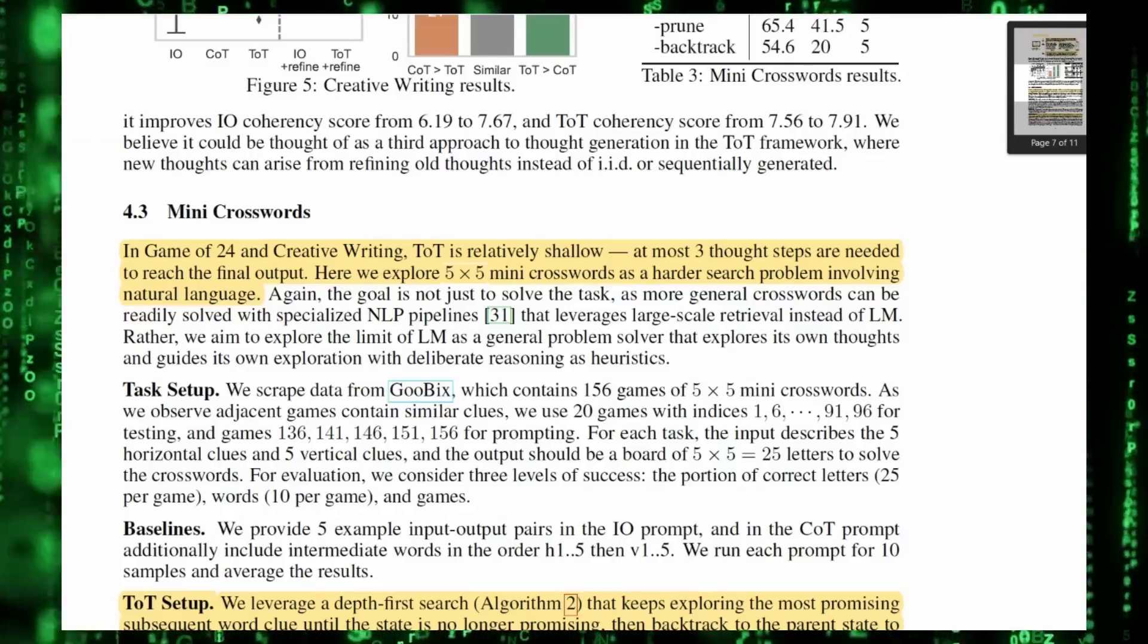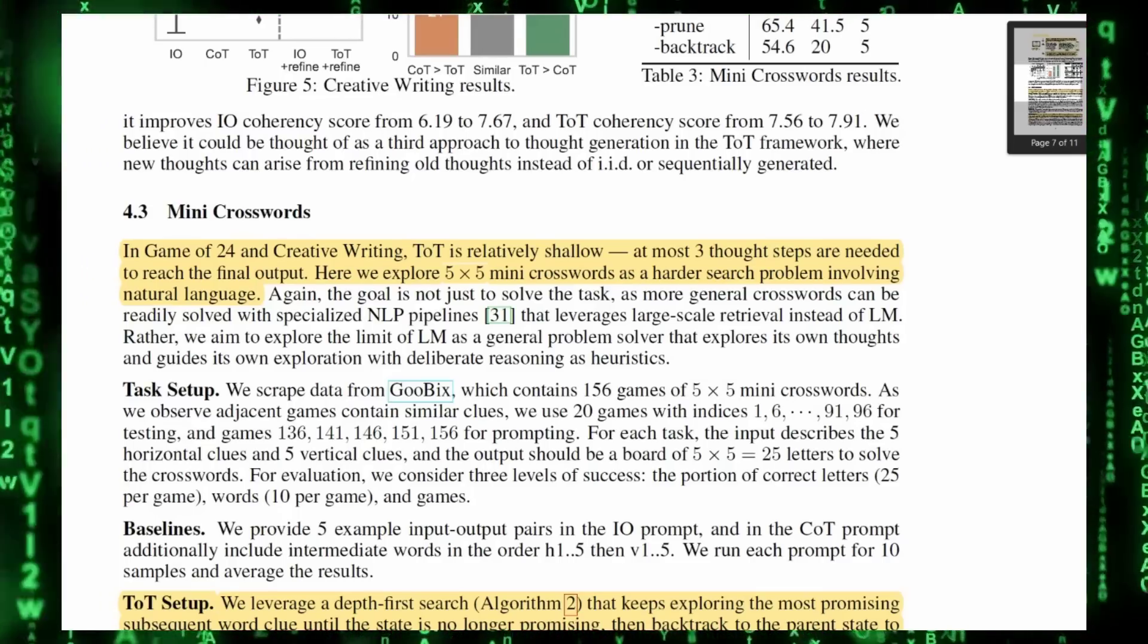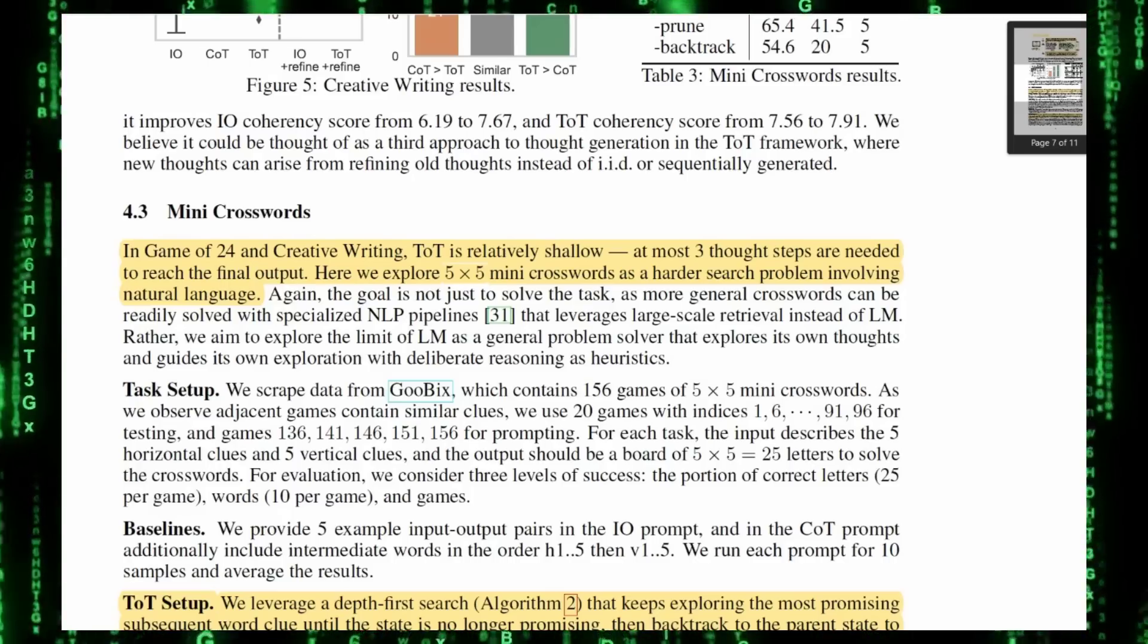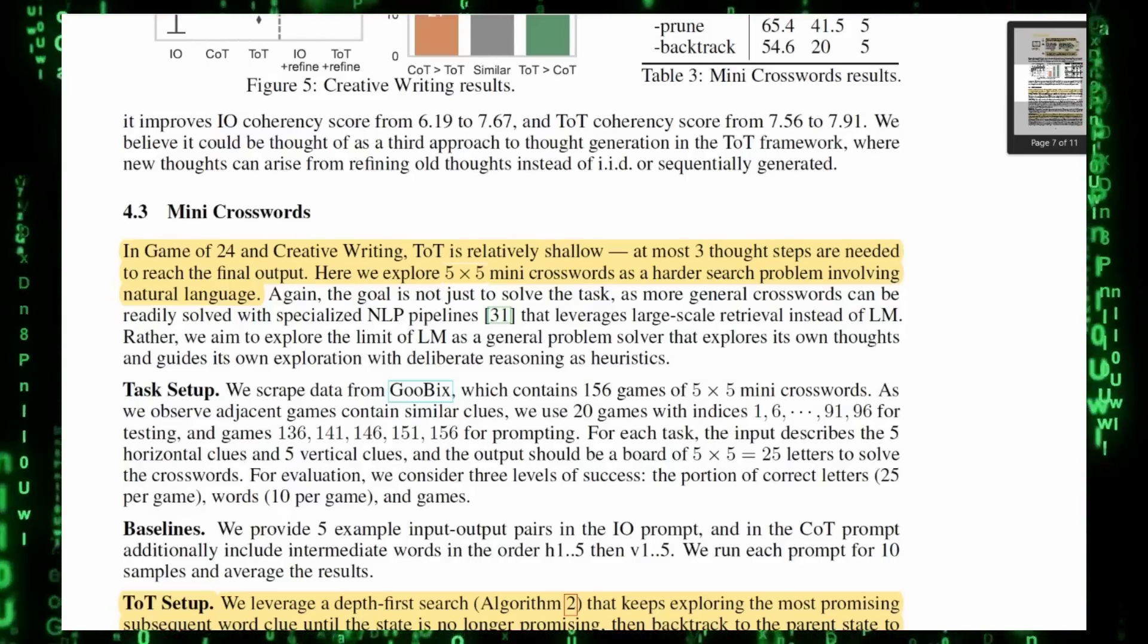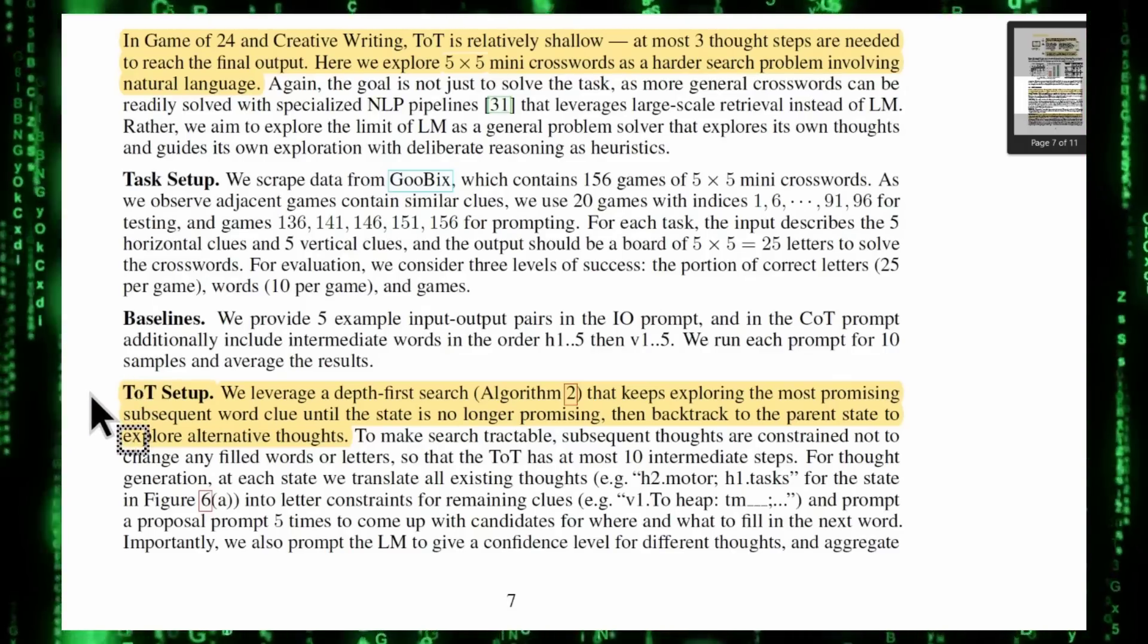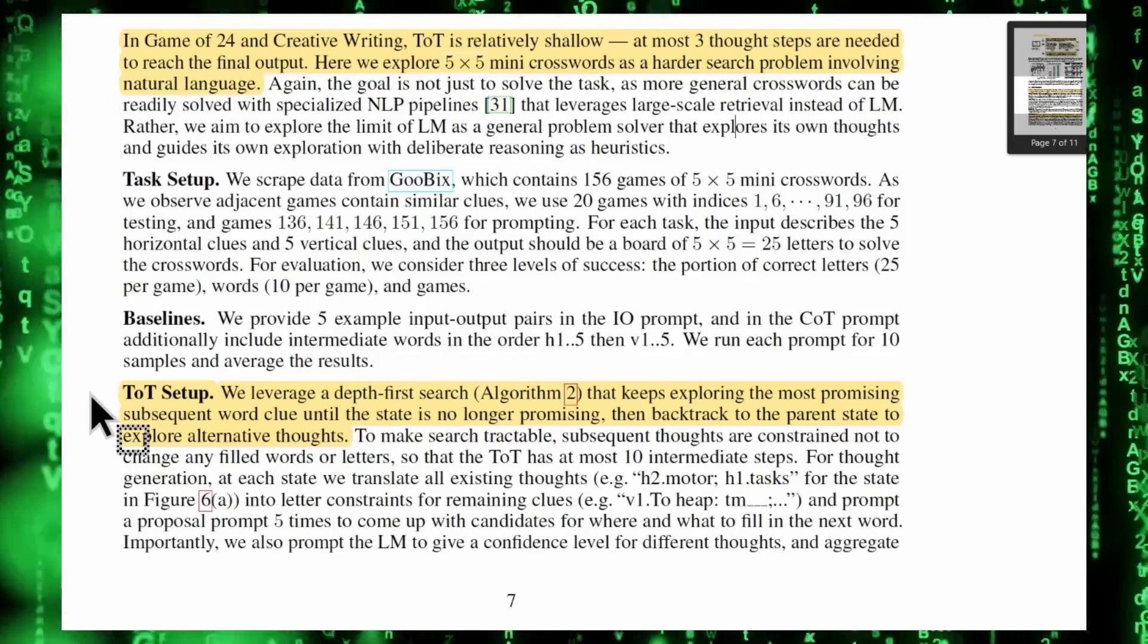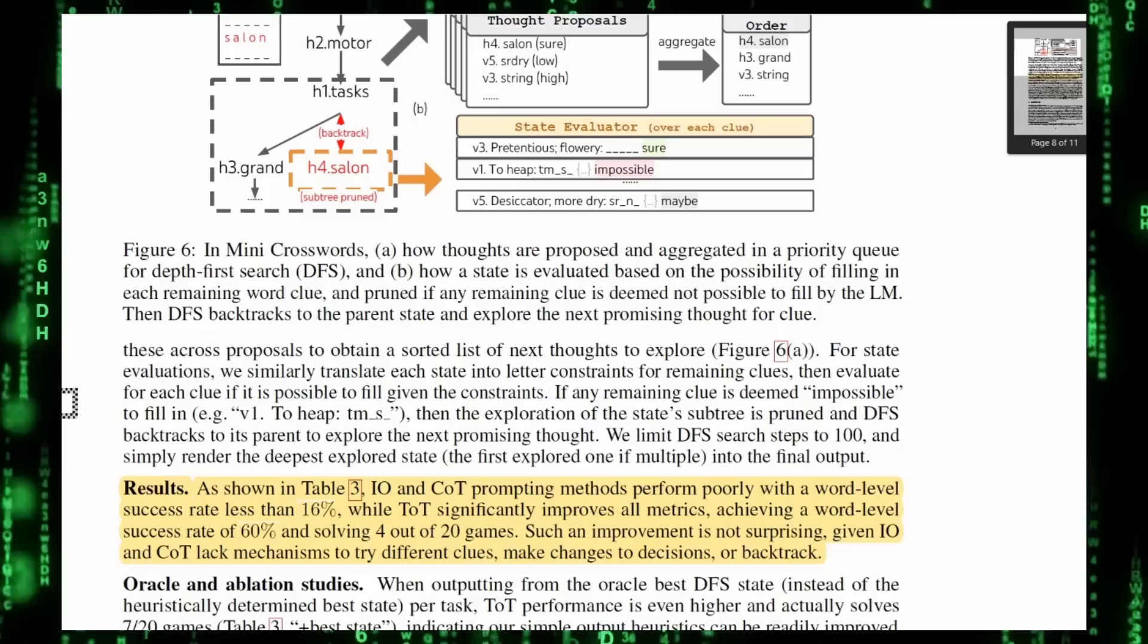Next, we're looking at mini crosswords. So in Game of 24 and creative writing, TOT is relatively shallow. At most three thought steps are needed to reach the final output. Here we explore five by five mini crosswords as a harder search problem involving natural language. So in the TOT setup, we leverage a depth-first approach that keeps exploring the most promising subsequent word clue until the state is no longer promising, then backtrack to the parent state to explore alternate thoughts.